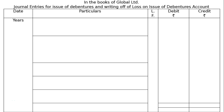The question is: Global Limited issued 10,000 8% debentures of Rs 100 each, redeemable at the end of 3 years at a premium of Rs 9. Loss on issue of debentures is to be written off equally over the life of debentures. Pass the journal entries for writing off the loss on issue of debentures. Also prepare the loss on issue of debentures account.